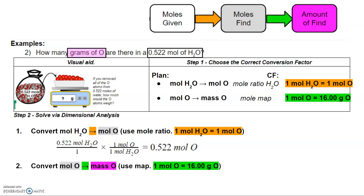Now that we have our moles of oxygen, we convert from moles of oxygen to mass of oxygen using our molar mass as the conversion factor. We take 0.522 moles of oxygen over one, multiply by the conversion factor fraction with one mole of oxygen on the bottom and 16 grams of oxygen on the top, so moles of oxygen cancel out and we're left with grams of oxygen.